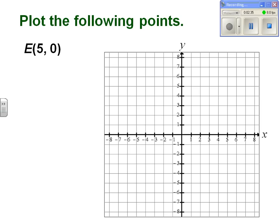Let's look at some special points. E(5, 0) means that I have to move 5 steps along the x-axis and 0 steps along the y-axis. That's where I get my point (5, 0).